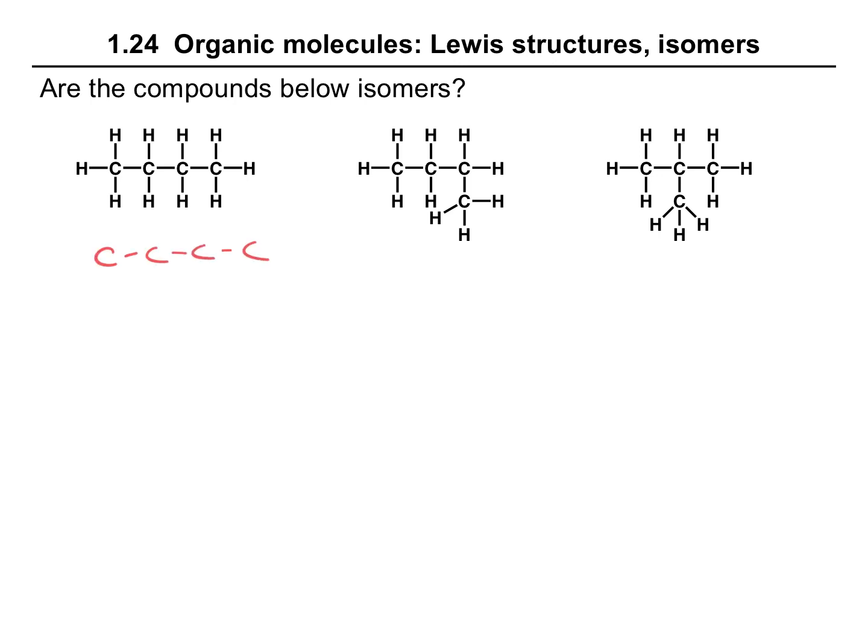If we look at our second structure, we have carbon, carbon, carbon, and then it bends down here to show another carbon. But what we have here is just a difference in representation. In each case, we have four carbons connected in a line.